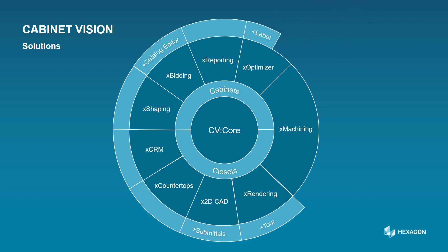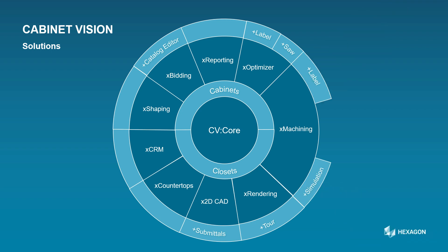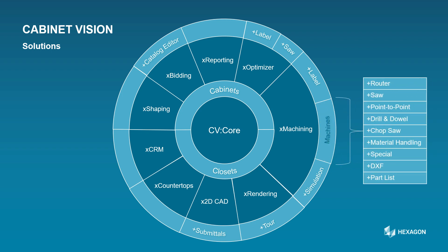If you want to label parts from the optimized patterns, you can get the Label Edition for the Optimizer. And if you need NC output with the Optimizer Multiplier, you simply add the Saw Edition. For those with the Machining Multiplier, you can add labels, simulation, and whatever machines you require. For example, if you get router, then you will get nesting and off-cut management and all other functionality necessary to run your physical CNC router.